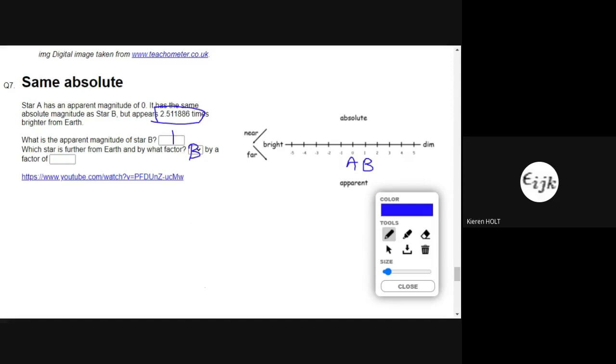Brighter, and by what factor? Right. Well, what I'll do here is I think I'll use the inverse square law. Brightness equals luminosity over 4πd². They have the same absolute magnitude, so the luminosity is the same, and that means the brightness is proportional to 1 over d². Let's look at the brightness ratio.